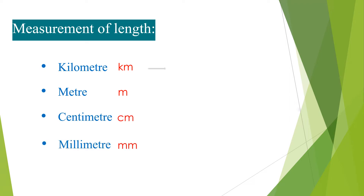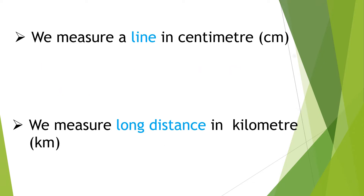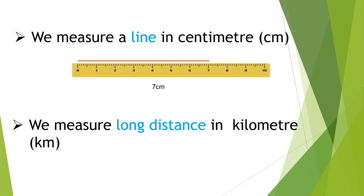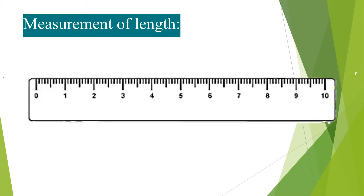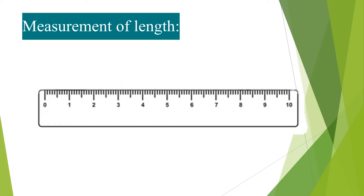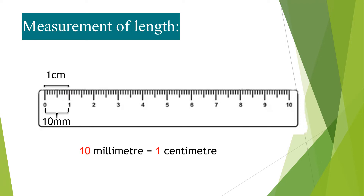Kilometer is the highest measuring unit and millimeter is the lowest measuring unit. We measure a line in centimeter. We measure long distance in kilometer. On this ruler, the long marks with the numbers represent centimeters, and the short marks in between represent millimeters. There are 10 millimeters in every centimeter. 10 millimeters equal to 1 centimeter.